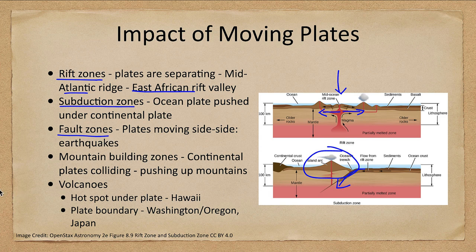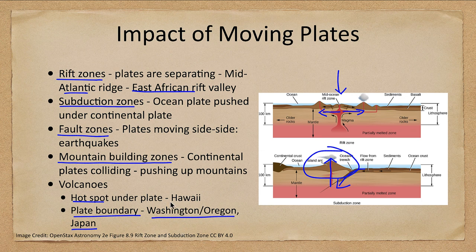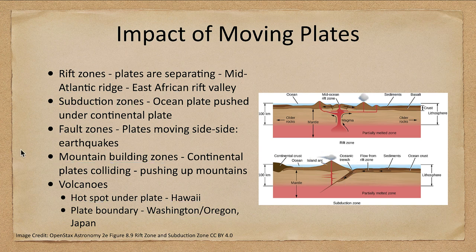We have fault zones where plates are moving side by side, and mountain building zones where continental plates are colliding and pushing up mountains — this is where India crashes into the Eurasian plate, pushing up the Himalayan mountains, very fresh new mountains that have formed. In terms of volcanoes, you can have those at a plate boundary such as in a subduction zone, present in Washington, Oregon, and around Japan, or you can have a hot spot — a weaker spot in the crust where material wells up in the middle of a plate, as with the Hawaiian Islands.